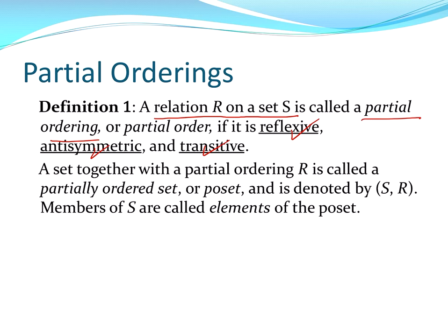We have a shorthand term for it. If you have a set together with the partial ordering, it's called a partially ordered set, or a poset. We usually give the set first and then the relation in an ordered pair.